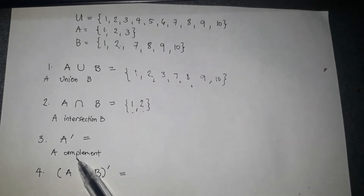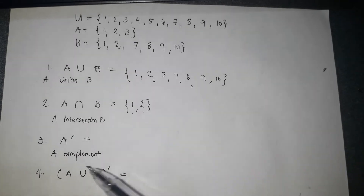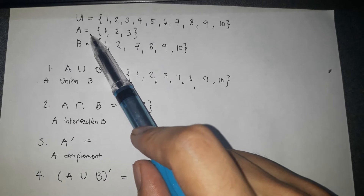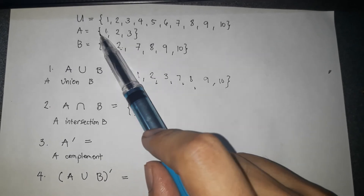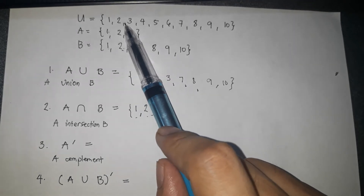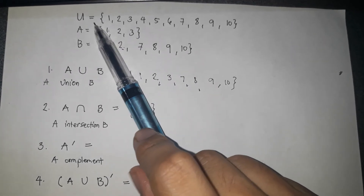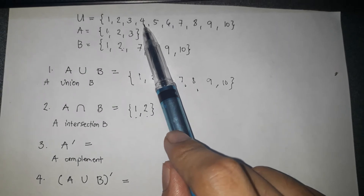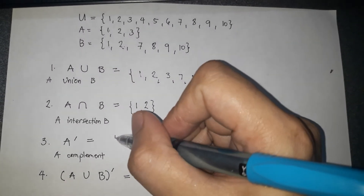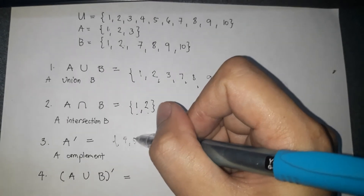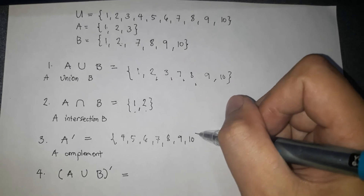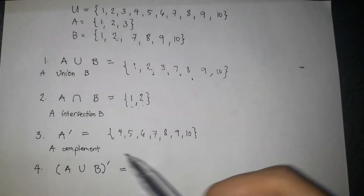Next, A complement. The meaning of complement is: what are those elements in U that you cannot find in A? The elements of A are 1, 2, and 3. So therefore, the elements of U not found in A are 4, 5, 6, 7, 8, 9, and 10. So the A complement is {4, 5, 6, 7, 8, 9, 10}.